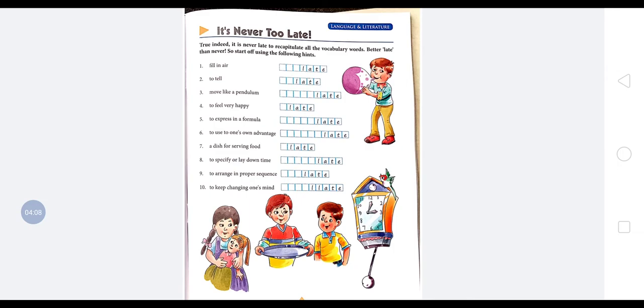Fourth is to feel very happy. The word for this sentence will be elate. E you will write it here, and 'late' is already written here.